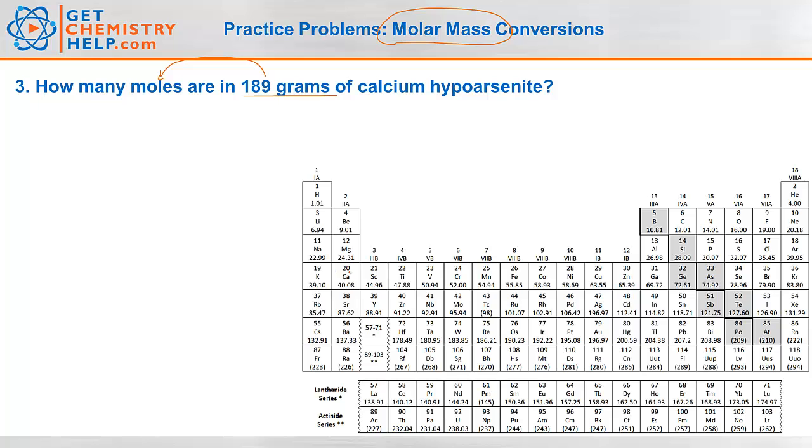So calcium, that's a metal, hypoarsenite, that's a polyatomic, must be an ionic compound. So I can figure that up. So calcium is 2 plus, hypoarsenite is AsO2, 3 negative, do my little crossover rule. So calcium hypoarsenite would be Ca3 and then AsO2 taken twice.